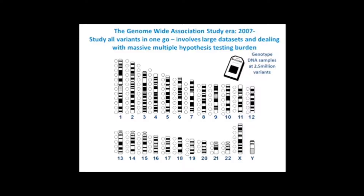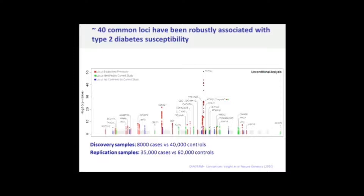Whereas before, if you were looking at a single variant, your statistical test would use a p-value of less than 0.05, now you're doing perhaps a million tests in this experiment. You have to correct that p-value for doing that number of tests. What we do is use a Bonferroni correction — we divide the 0.05 p-value by a million. So a significant p-value for an experiment like this would be 5 times 10 to the minus 8.